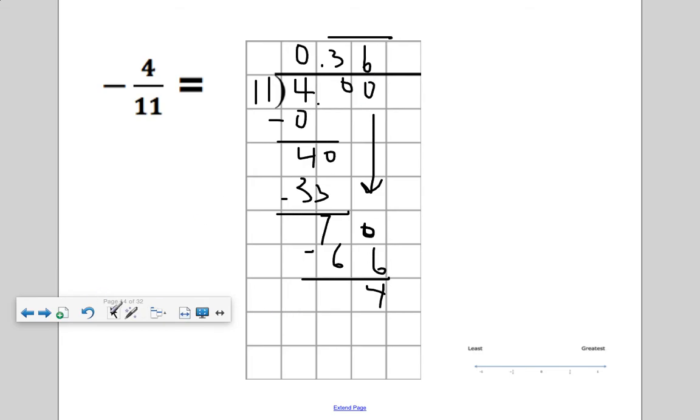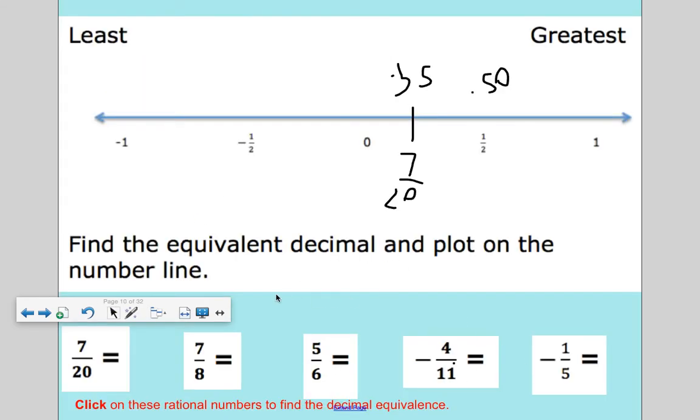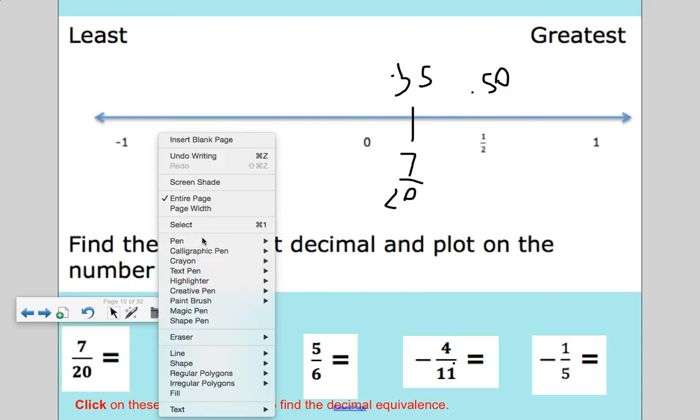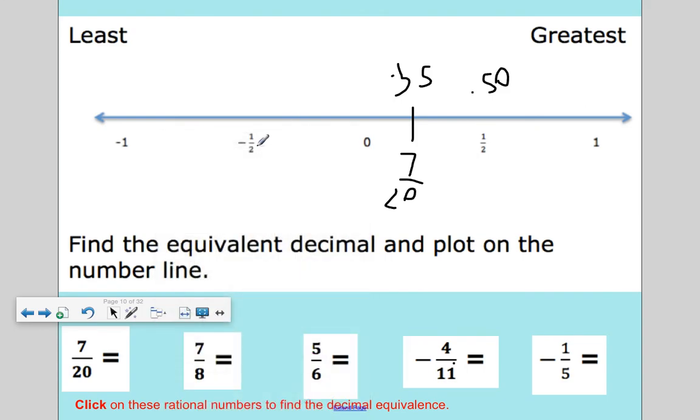So what we will repeat will be the 36. So that would be negative 0.36 repeating. So negative, where's my pen? So that would be, negative 1/2 is negative 50 hundredths as a decimal.